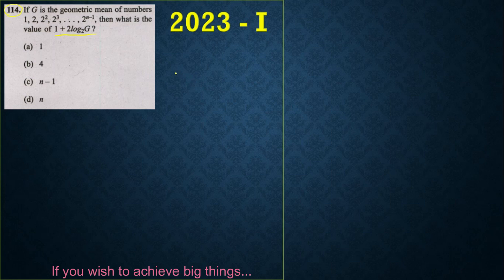I hope everyone knows what is the geometric mean. So g is nothing but the square root of multiplication of all the numbers given. So here they have given the numbers all the way from 1 to 2 raise to n minus 1.